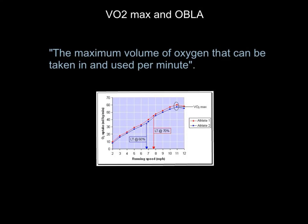The definition of VO2max is the maximum volume of oxygen that can be taken in and used per minute. There are two key things people forget every year in the exam: they forget to say it's the maximum volume of oxygen that can be taken in and used, and they forget to say per minute. A tip: read VO2max backwards — it's the maximum volume of oxygen, and all you need to remember is to add 'per minute'.